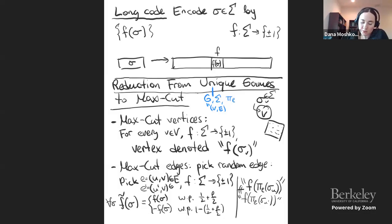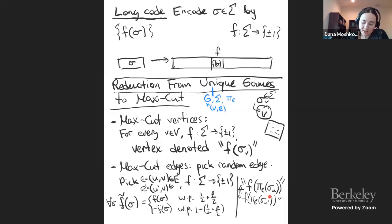I'm adding f̃ which checks this in a robust version — this should be true even if you change the function a little, which shouldn't change much with high probability. This is the construction. I realize I'm running out of time, so let me sketch the proof of why this reduction works.